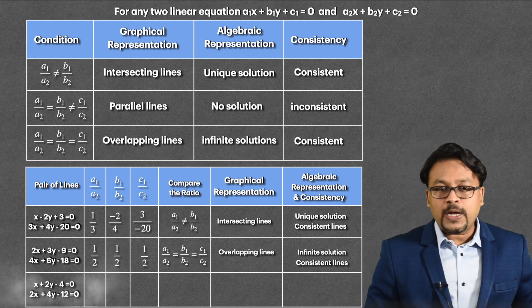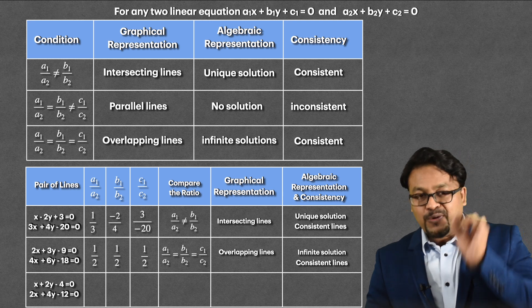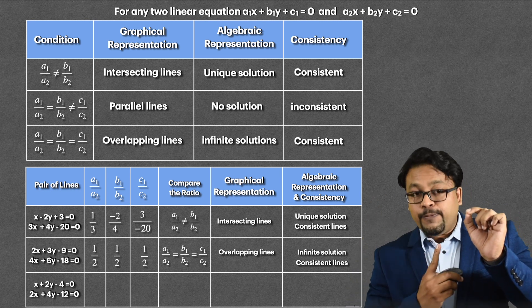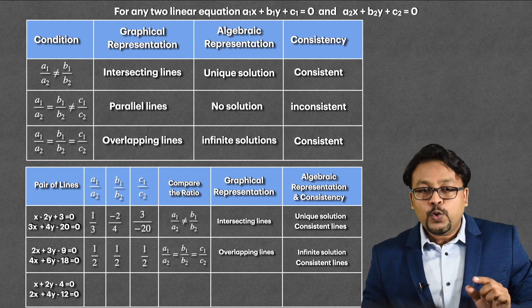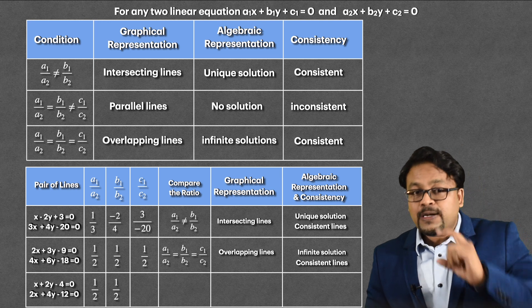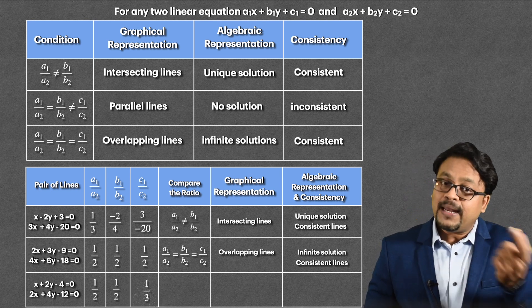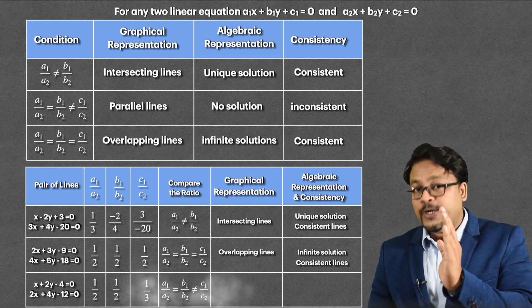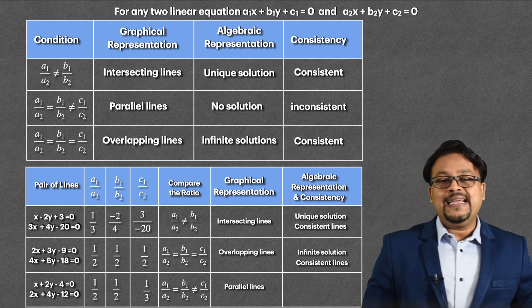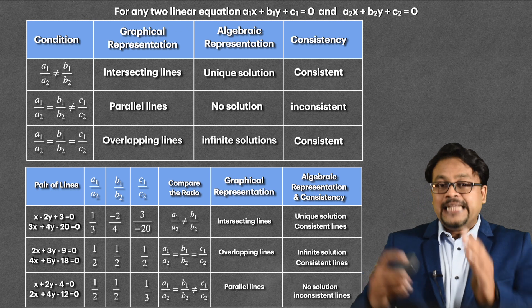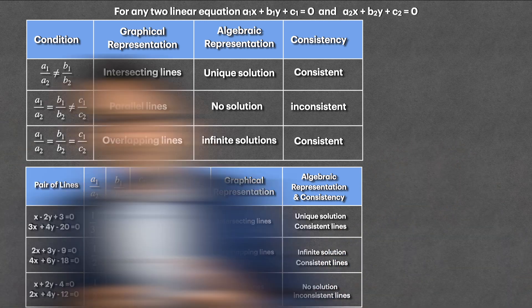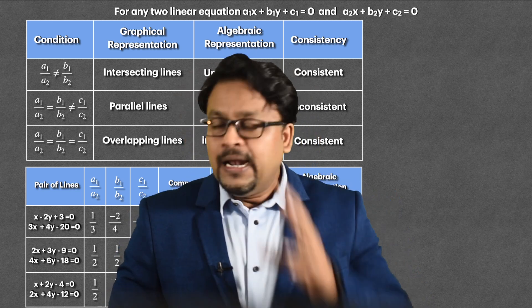Last example: x plus 2y minus 4 equal to 0, and 2x plus 4y minus 12 equal to 0. So a1 = 1, b1 = 2, c1 = minus 4, and a2 = 2, b2 = 4, c2 = minus 12. So a1/a2 = 1/2, b1/b2 = 2/4 = 1/2, and c1/c2 = minus 4 upon minus 12 = 1/3. Here a1/a2 = b1/b2 but NOT equal to c1/c2. This is the condition for parallel lines. So the graphical representation is parallel lines, the algebraic representation is no solution, and the lines are inconsistent. I hope you understood the whole concept. I'll be coming with more such videos of CBSE 10th standard. Stay tuned for my next one. Till then, God bless. Peace.